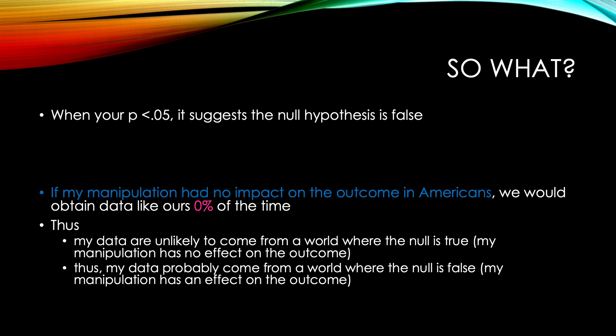That suggests something really important. That suggests we would not obtain data like ours in a world where there was no effect of the IV on the DV in the population. This is actually a good thing because we want to disprove the null hypothesis. When your p-value is less than 0.05, it suggests the null hypothesis is false. When your p-value is less than 0.05, you're basically statistically disproving the null hypothesis — that there is no effect of your manipulation on the DV in the population. My data are unlikely to come from a world where the null is true; thus, my data probably came from a world where the null is false.